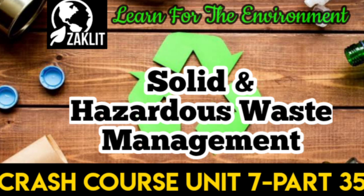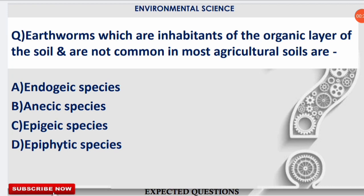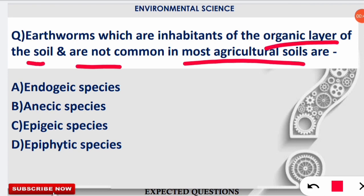The first question for today's video: earthworms which are inhabitants of the organic layer of the soil and which are not common in most agricultural soils are what kind of species? The correct option is option C — epigeic species of earthworms are the inhabitants of the organic layer of the soil.